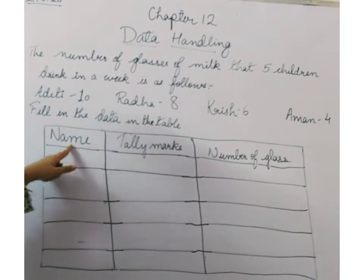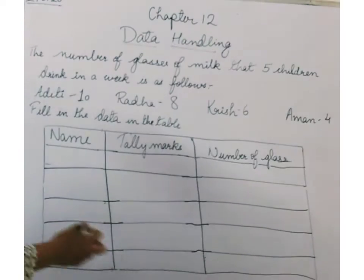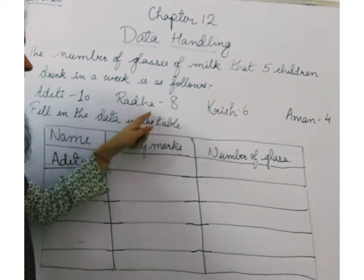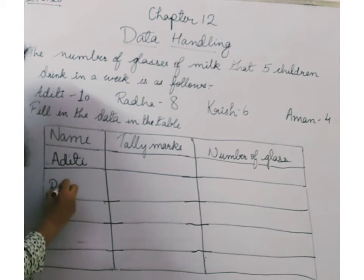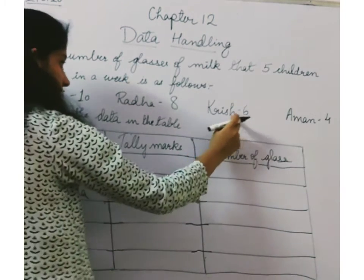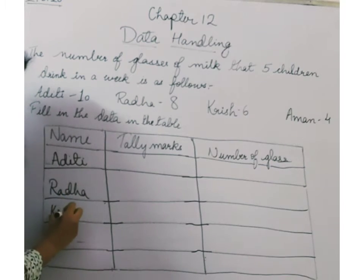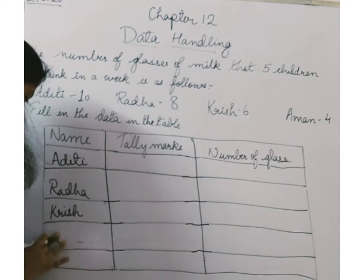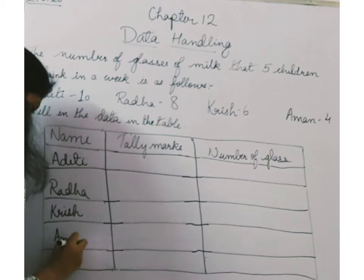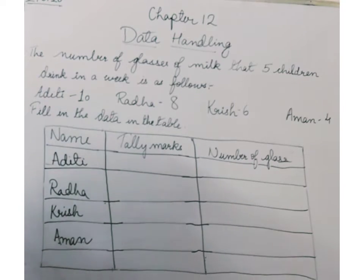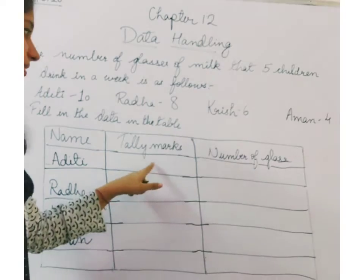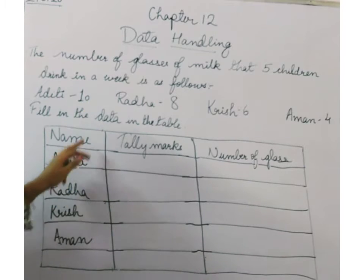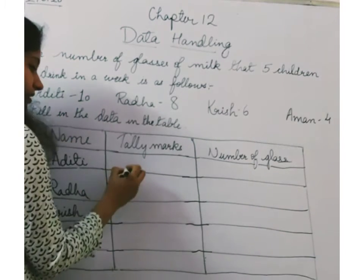So let us start. The first column is name. Aditi is drinking how many glasses? Ten. So let me make the tally marks.